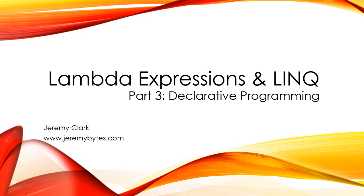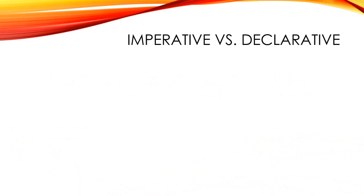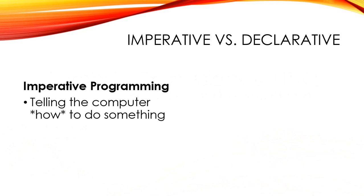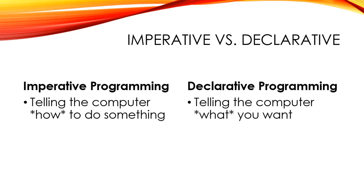This time, we're going to be looking at declarative programming. Specifically, we'll see how LINQ can help us add declarative style into our existing code. But first, we need to look at the differences between imperative programming and declarative programming. With imperative programming, we're telling the computer how to do something. We're taking full control of the process and we have to manage all of the pieces. With declarative programming, we're telling the computer what we want and we're letting it figure out the best way to accomplish that task.